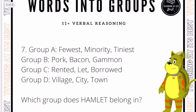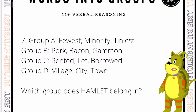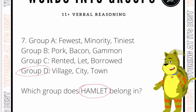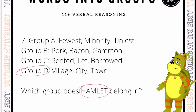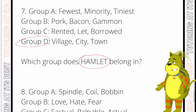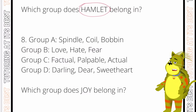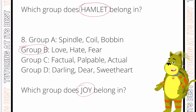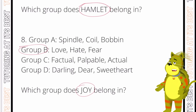Question seven: we're working with the word 'hamlet'. Looking at group D, these are all types of settlements, as is a hamlet, so it belongs in there too. And for question number eight we're looking for the word 'joy'. All of the words in group B are emotions that we feel — joy is one of those — so joy belongs in group B.